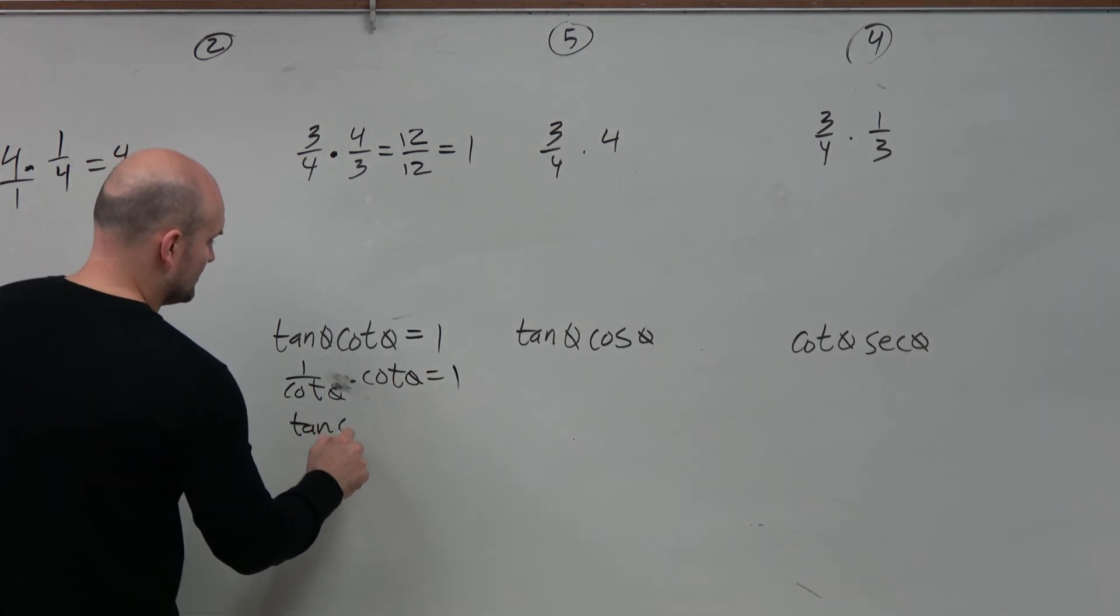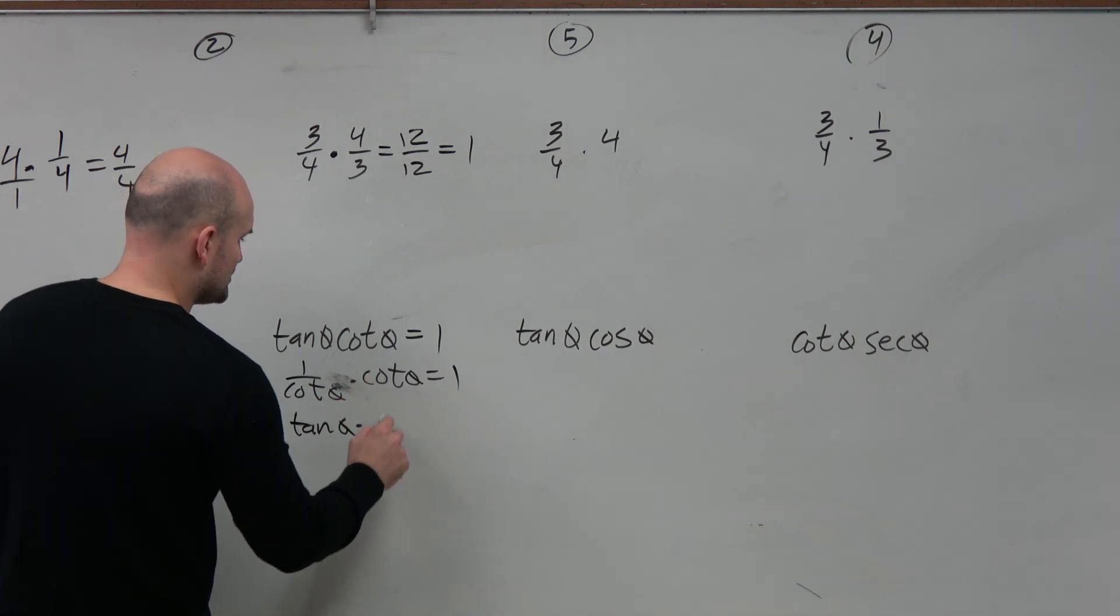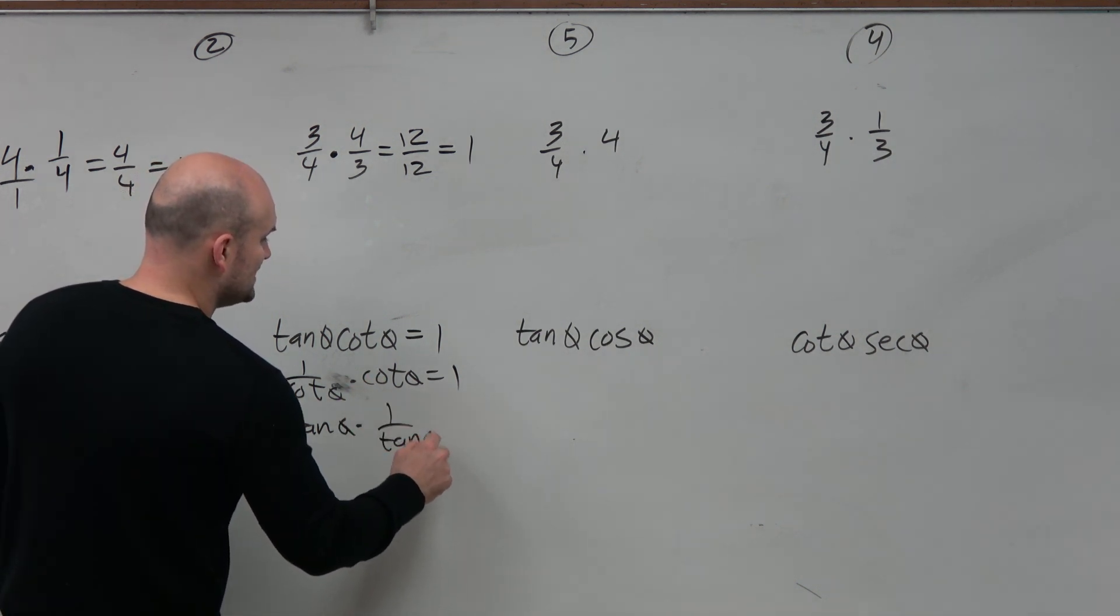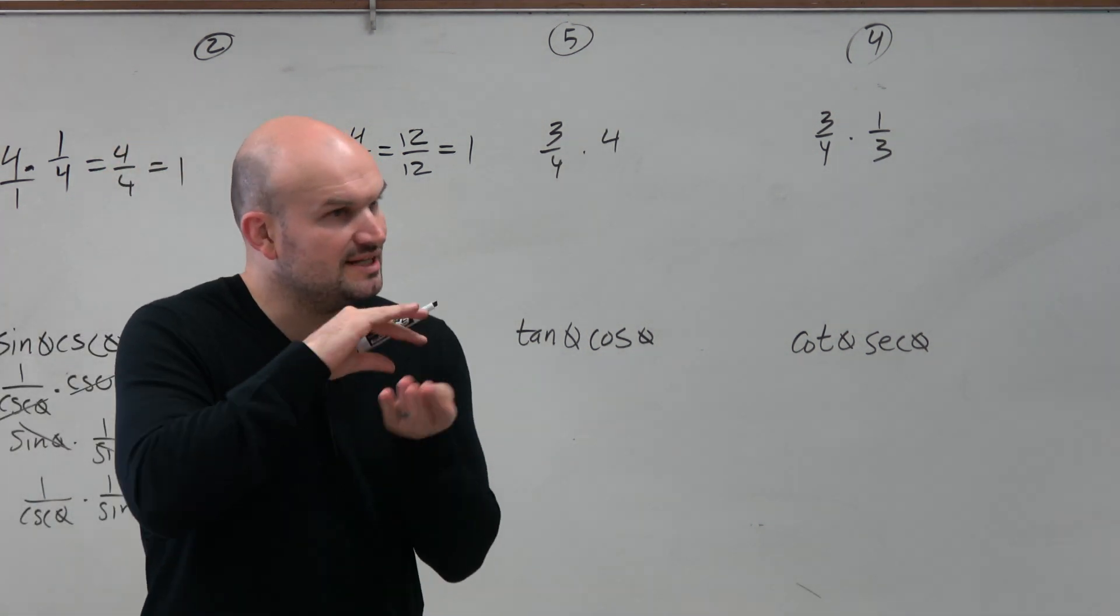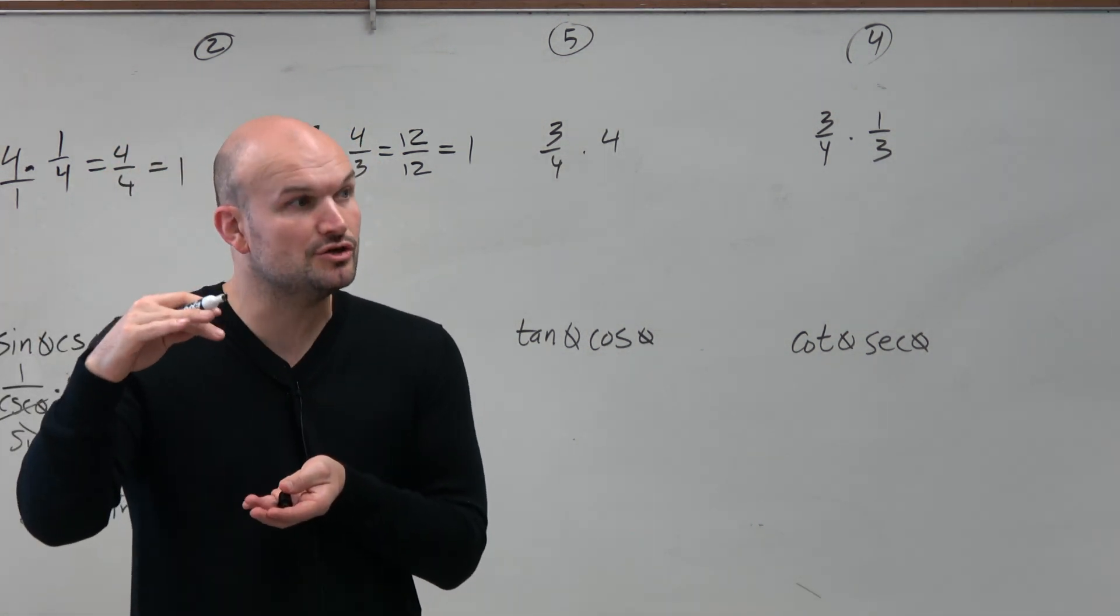You could leave tangent there and you could do cotangent as 1 over tangent. So using these reciprocal identities, when we're looking to simplify, typically we're looking for something in the denominator to divide it with something in the numerator.